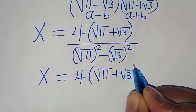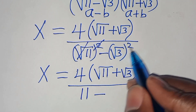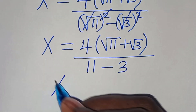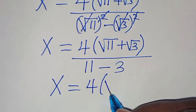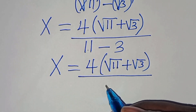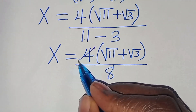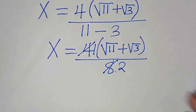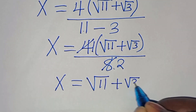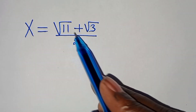So x equals 4 times (square root of 11 plus square root of 3) divided by (11 minus 3), which is 8. Simplifying: 4 divided by 8 equals one half, so x equals (square root of 11 plus square root of 3) divided by 2. Therefore x equals (square root of 11 plus square root of 3) over 2.